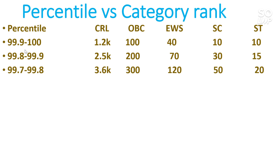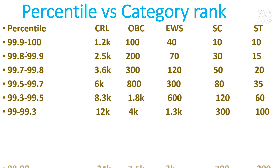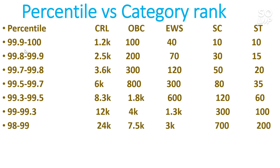For 99.7 to 99.8 percentile, your CRL will be around 3,600. For other category ranks you can check sideways by pausing the video. For 99.5 to 99.7, CRL will be under 6,000. For 99.3 to 99.5, CRL will be under 8,300. For 99 to 99.3, CRL will be under 24,000. For 97 to 98, CRL will be under 36,000.